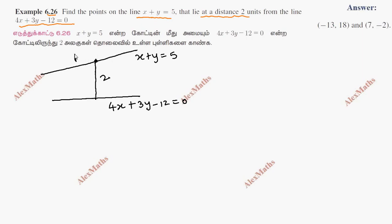Usually the point on the line is x, y equals 5 minus x. So the point is x, 5 minus x.